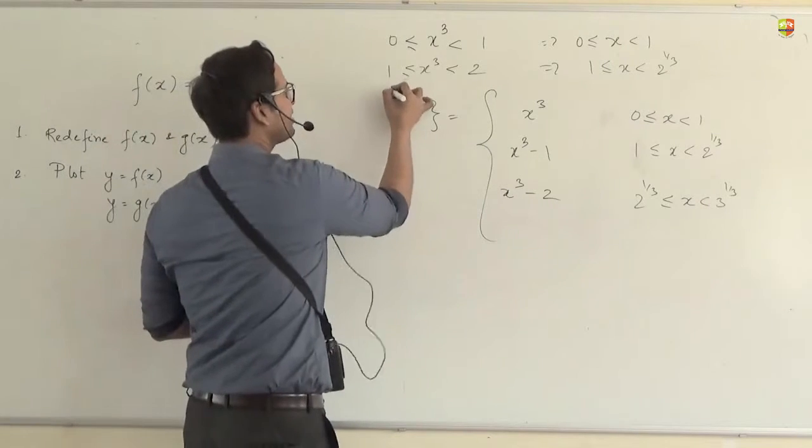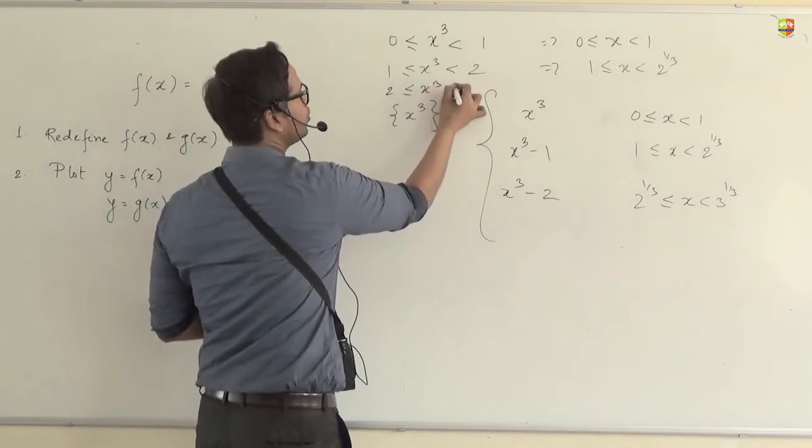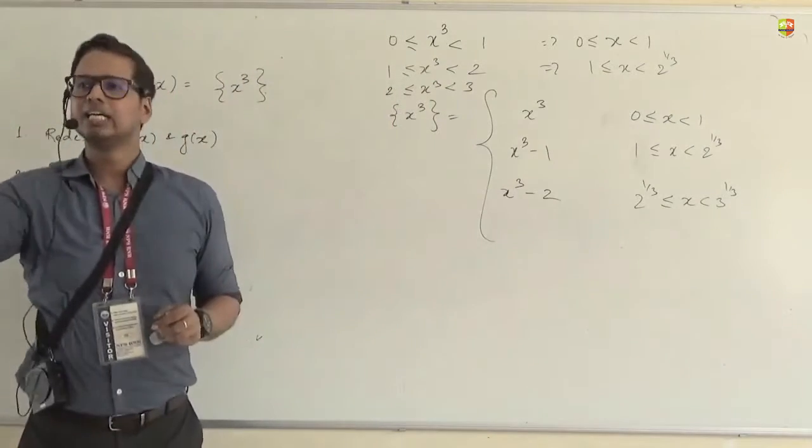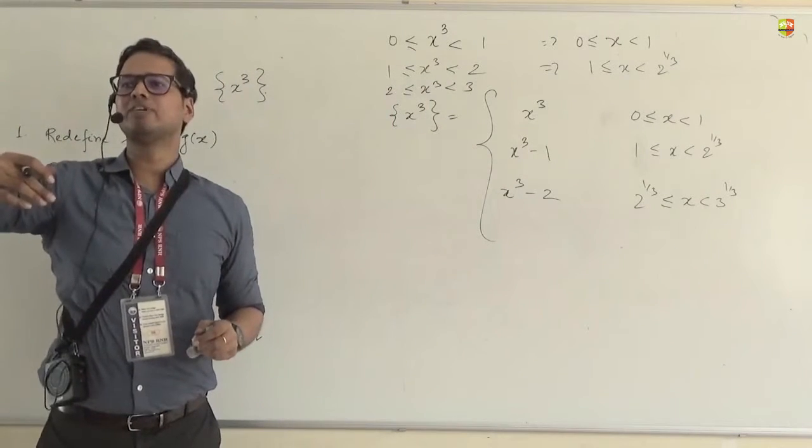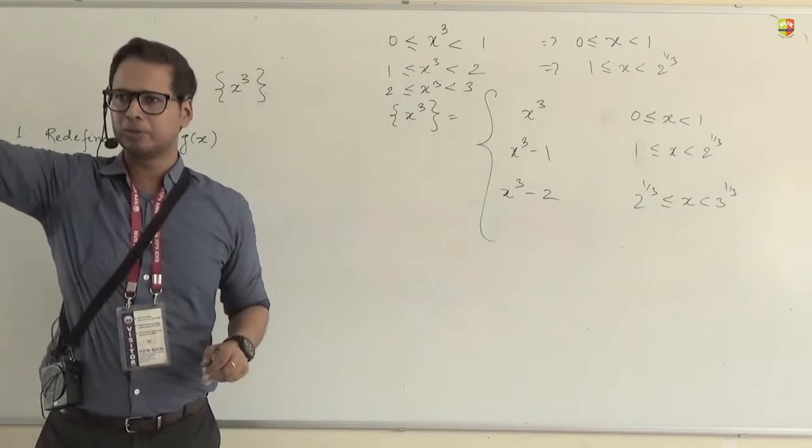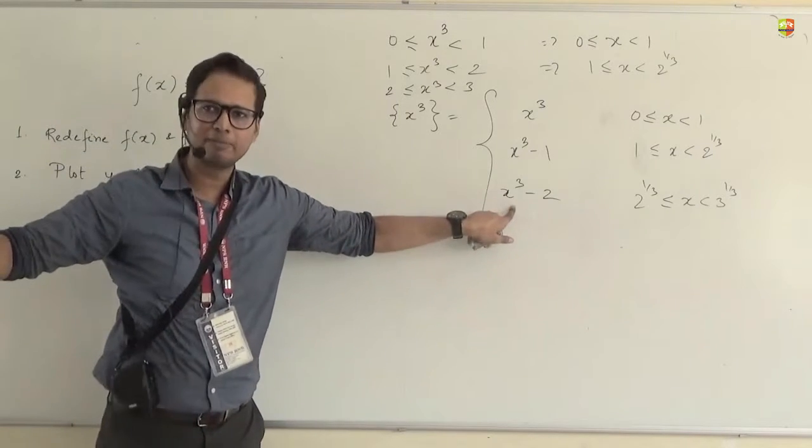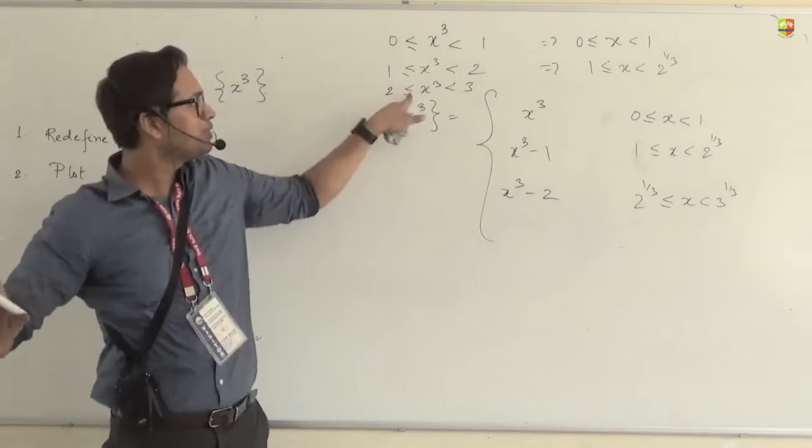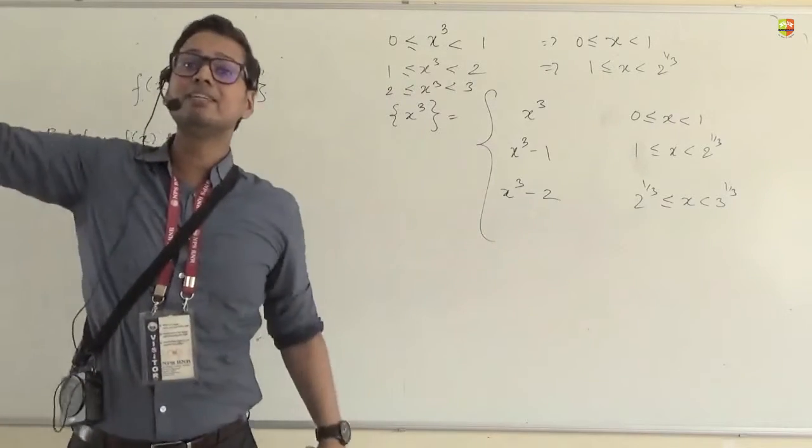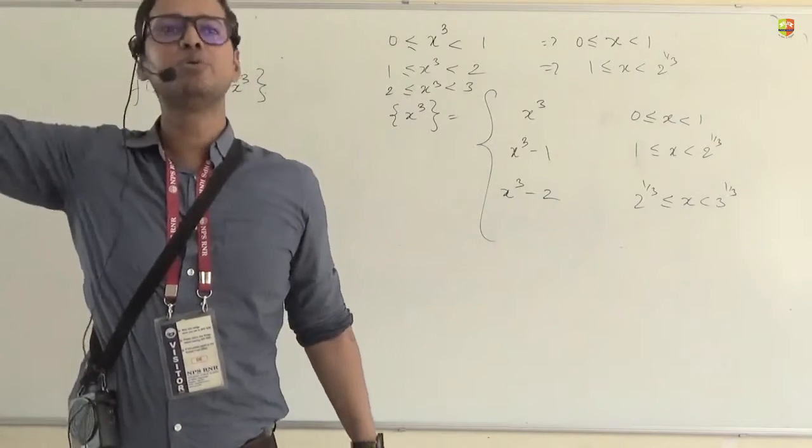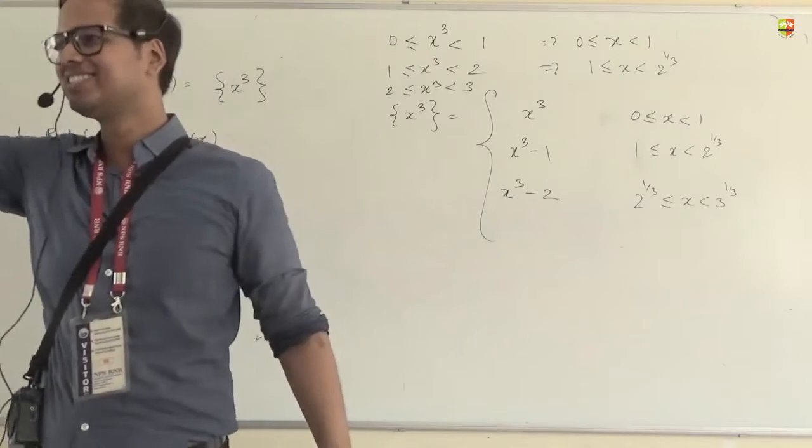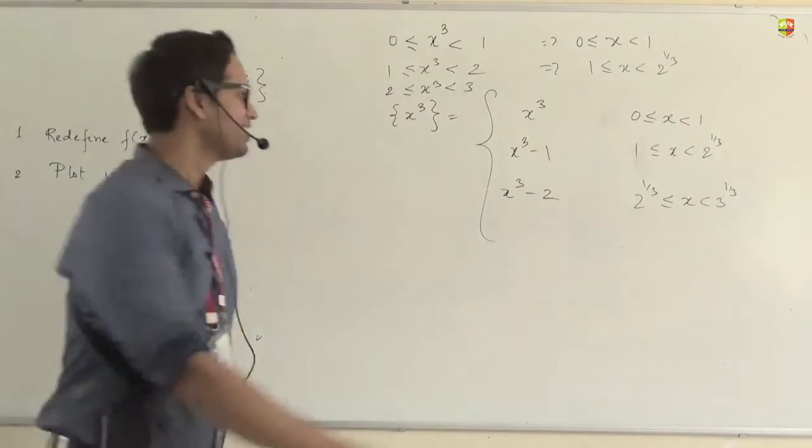Are you getting the feel of the problem or not? See, simple. If your x cube has to be between 2 and 3, of course the fraction part of it will be x cube minus 2. No doubt about it. So this result came from there. Now, if x cube is between 2 and 3, x will be between cube root of 2 and cube root of 3, isn't it? Common sense? Right? So this is how I do it.